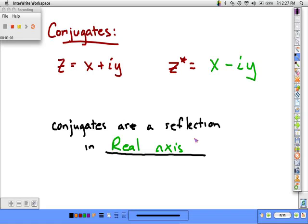If z is x plus iy, then the conjugate of z, which is what the asterisk means, would be x minus iy. The imaginary part is what changes in a conjugate, and conjugates are really just reflections in the real axis, a vertical reflection across that real axis.